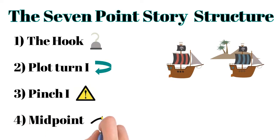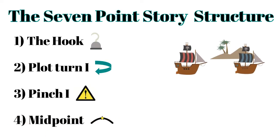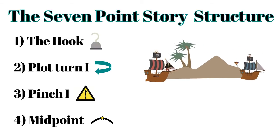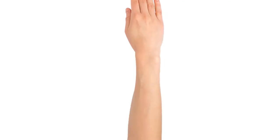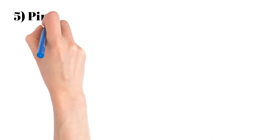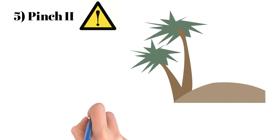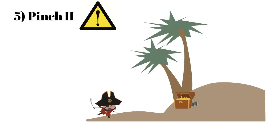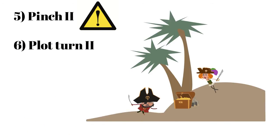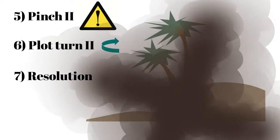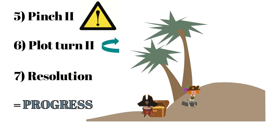4. The Midpoint: Move the characters from reaction to action; have them resolve to solve the problem. 5. The Second Pinch: Really put the pressure on the characters, make it dire, and up the difficulty. 6. The Second Plot Turn: Have them figure out the puzzle or weak point. 7. The Resolution: Have them actually win.